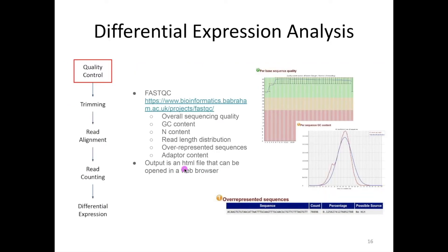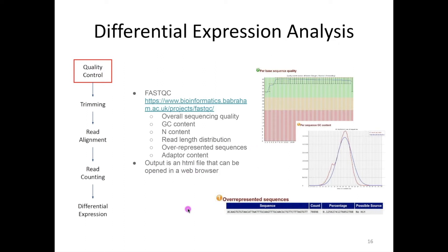You get millions — potentially hundreds of millions — of those rows back in your file, and we can't read them manually. So we need to do automated quality control using a piece of software called FastQC. FastQC reads your FASTQ files and gives you information about overall sequencing quality, GC content which can indicate contamination, how many N's there are, and whether there are any overrepresented sequences or adapters. You get back an HTML file you can open in any web browser. The most important output is the sequencing quality plot with green, yellow, and red zones.